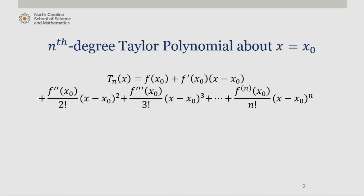Recalling the general form of an n-th degree Taylor polynomial about x naught, we see here we can actually write this in summation notation from k equals 0 to n of the k-th derivative of f evaluated at x sub 0 divided by k factorial times x minus x sub 0 to the k.